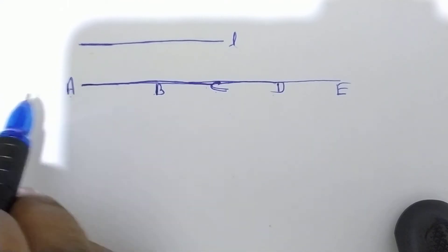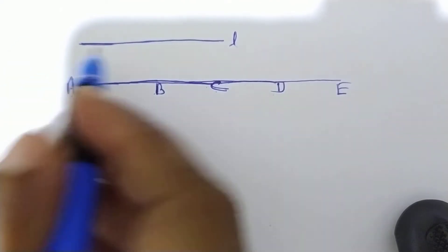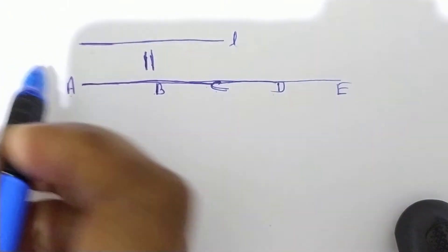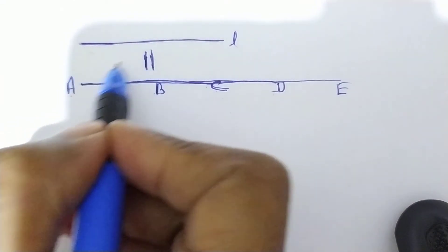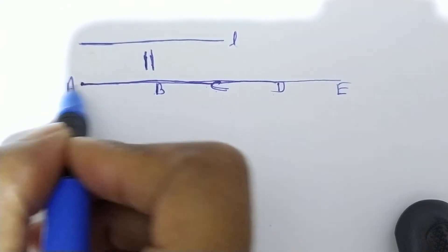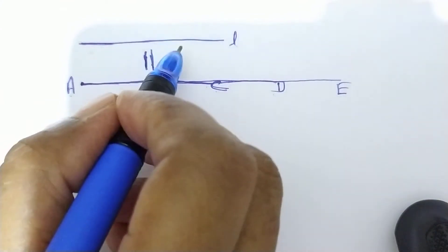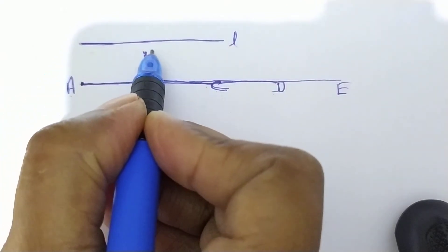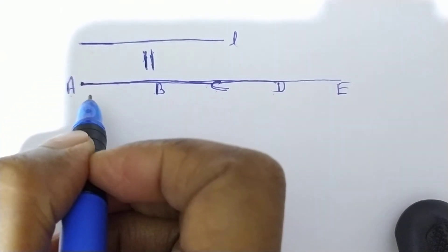Since lines AB, AC, AD and AE are parallel to line L, therefore point A lies outside L — means L par yeh point nahin hai. And through A, lines AB, AC, AD and AE are drawn, each parallel to line L. It means A jo hai, woh line L par nahin leta karta hai.